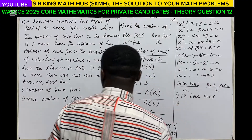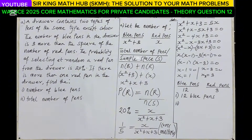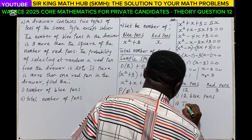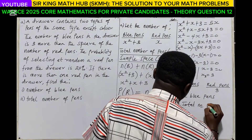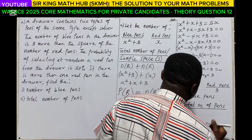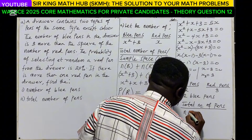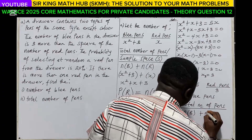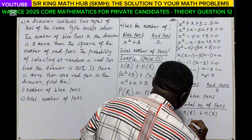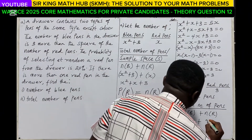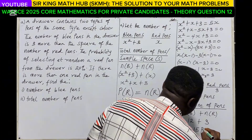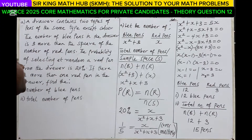For part (ii), the number of blue paints is 12. For part (iii), the total number of paints is the number of blue paints plus the number of red paints: 12 + 3 = 15. That completes part (a).